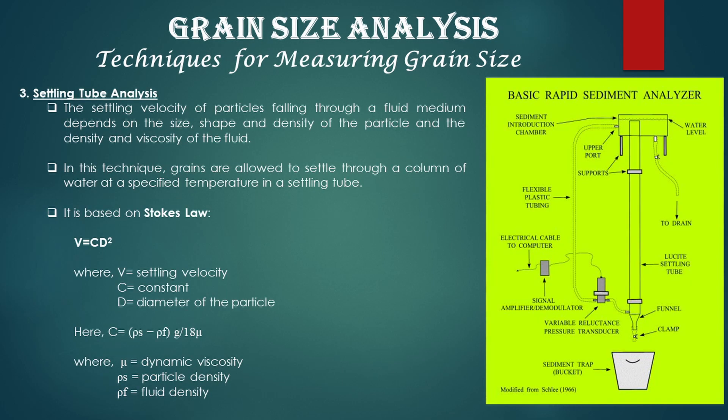Then, settling tube analysis. The settling velocity of particles falling through a fluid medium depends on the size, shape, and density of the particle, and the density and viscosity of the fluid. In this technique, grains are allowed to settle through a column of water at a specified temperature in a settling tube. It is based on Stokes' law: V = CD², where V is settling velocity, C is a constant, and D is the diameter of the particle.